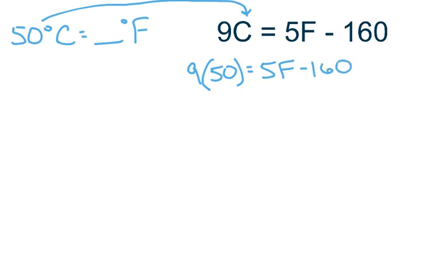And this is algebra, so the only thing I can do now is multiply. So 9 times 50 is 450, equals 5F, just bring everything else straight down, minus 160.